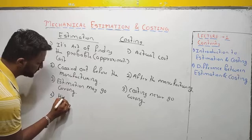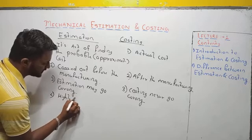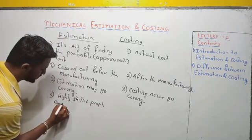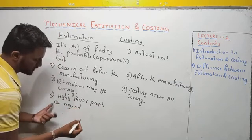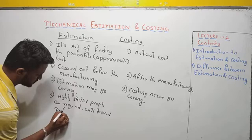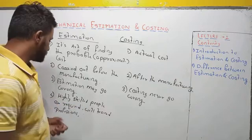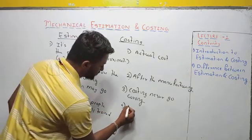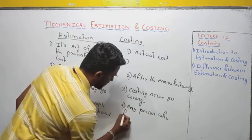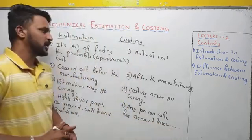To do estimation, highly skilled and well-trained professionals with experience in estimation are required. Whereas during costing, any person who has accounting knowledge can do the costing. These are the four major differences between estimation and costing.